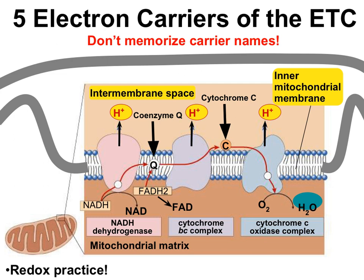The electron transport chain gets its name because it's literally a chain of electron transporters. These electron transporters and enzymes are embedded in the inner mitochondrial membrane. This diagram shows all of the spaces of the mitochondria: here is the outer mitochondrial membrane, and here is the inner mitochondrial membrane. That makes this the intermembrane space, and this the mitochondrial matrix.